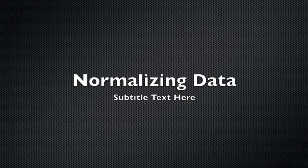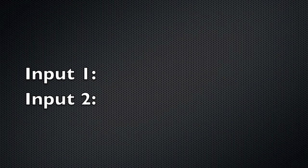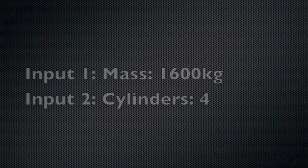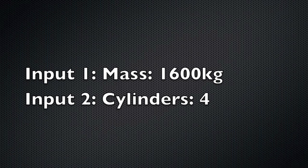Chapter 2: Normalizing Data. AI takes multiple inputs at the same time. Input is often a number, but not always. One number can overwhelm another. A car might weigh 1,600 kg; this same car has four cylinders — what's the fuel efficiency? Is the tiny number of four cylinders insignificant compared to 1,600 kg? No. Both are important. Normalize both to a percent. We must know the maximum weight and cylinders for all cars so we know the percent. Now they're of equal significance — zero through 100.